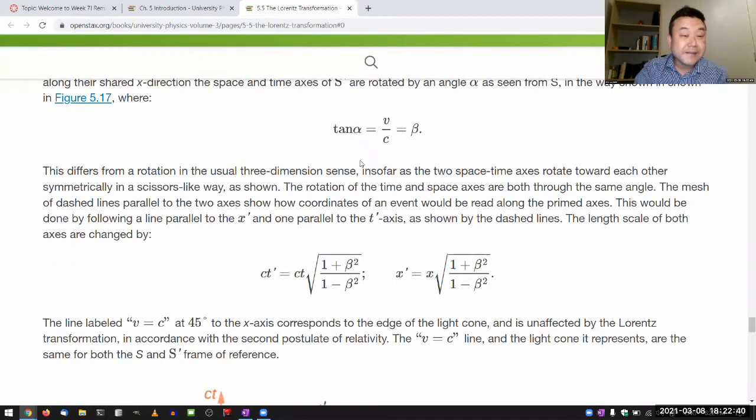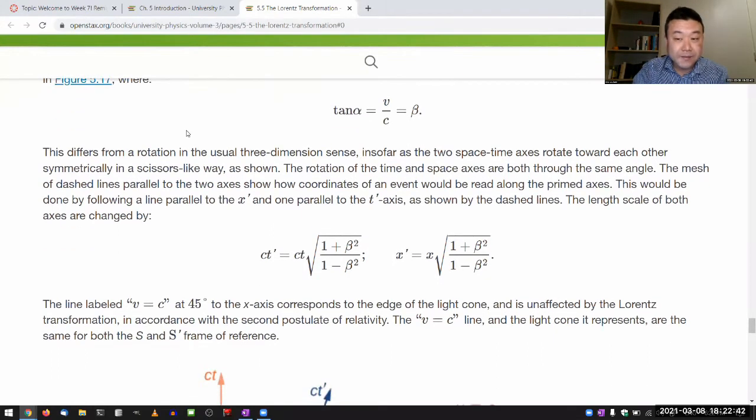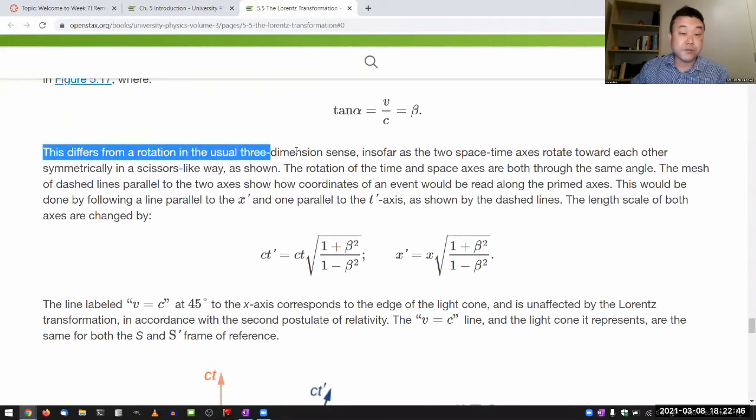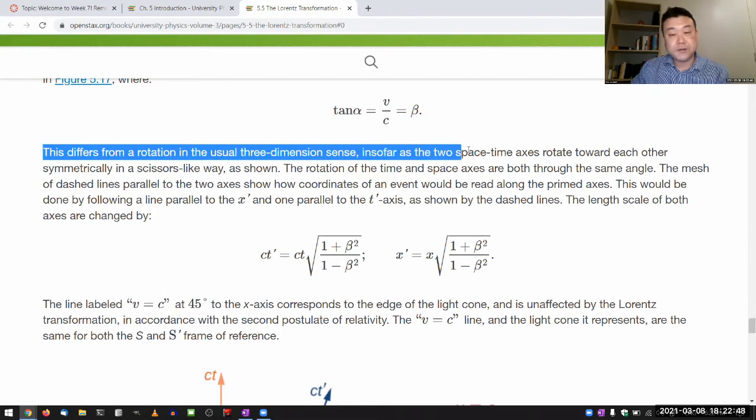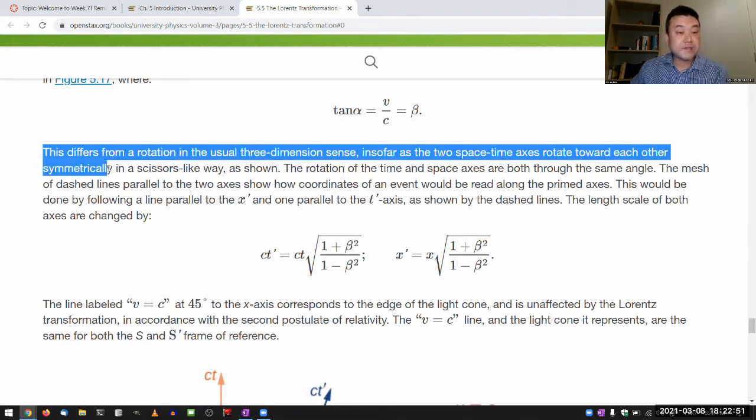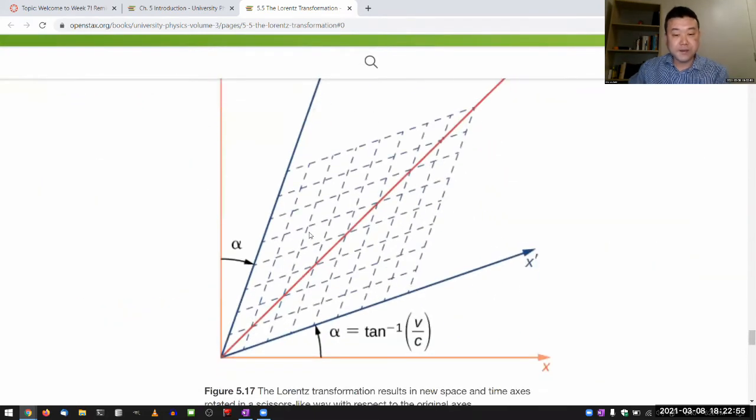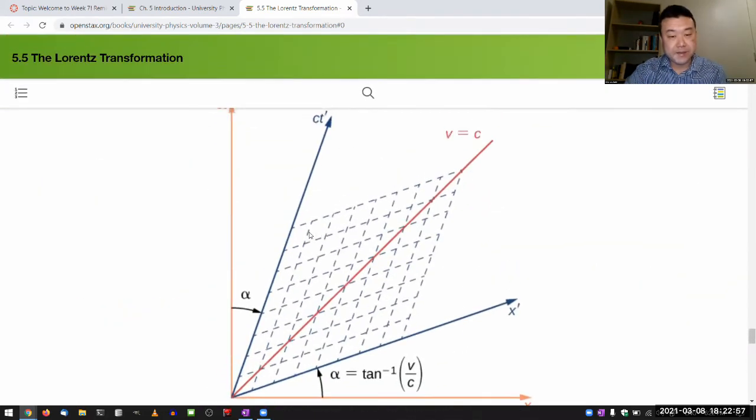And they do say here, this differs from a rotation in the usual three dimensional sense, as far as two space-time axes rotate toward each other, symmetrically, in a scissors-like way, as shown down here. And they describe this alpha as like a geometric angle.